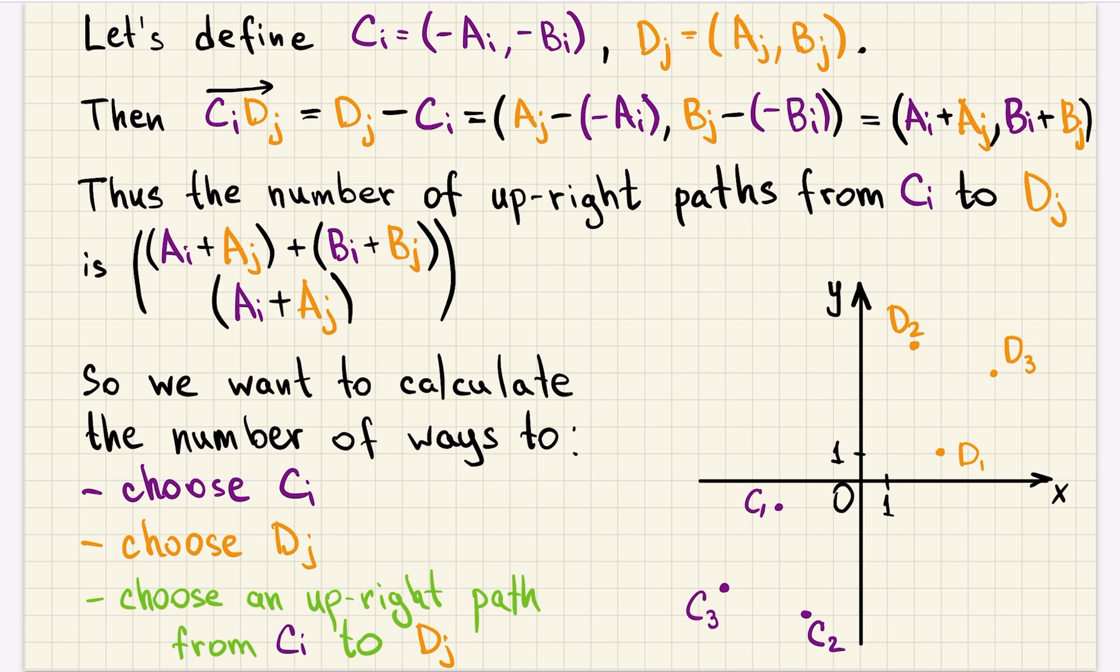How can we count the number of ways to go from some point to some point? Well, we know that it's binomial coefficient, but also we can easily calculate it using dynamic programming, just like on this grid. For each point, calculate the number of ways to come to it, and then for each point it's sum of number of ways to come in it from down direction and from left direction, which are already calculated. So that's for one start and one finish. Can we do something similar for multiple starts and multiple finishes? Well, yes.